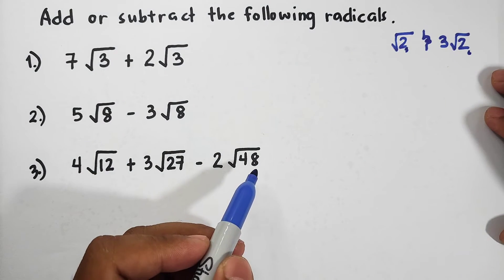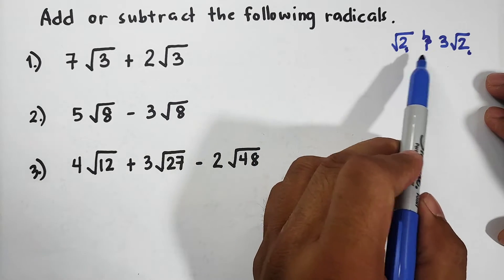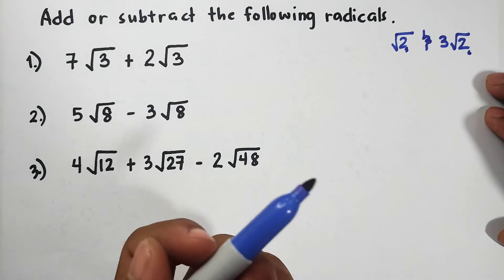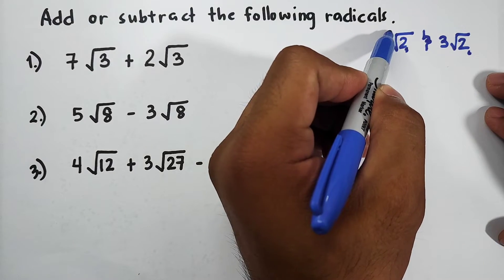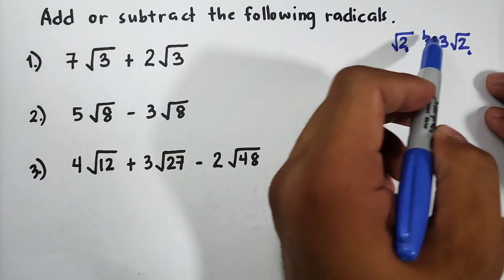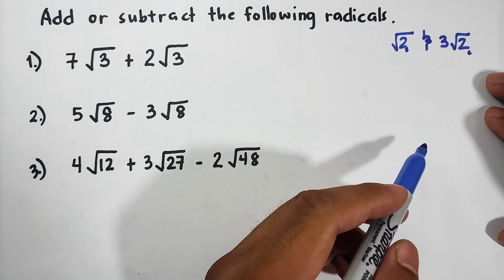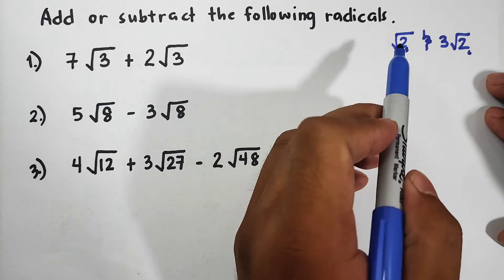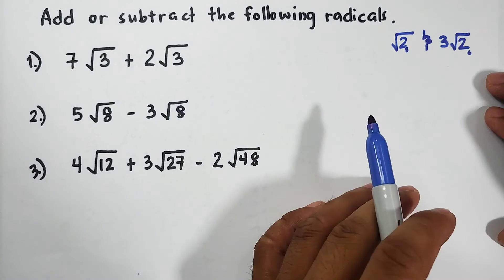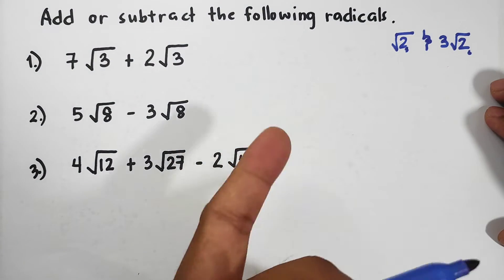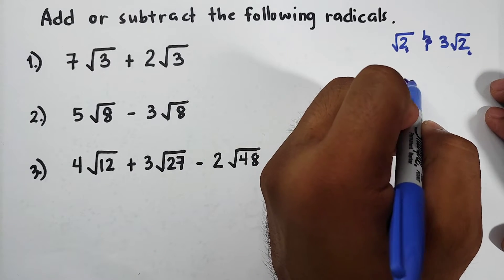First, look at the radicand — as you can see, the radicands are both 2. Second, check their index. Since both are invisible (meaning the index is equal to 2), these are similar radicals. Now let me give you an example of radicals that are NOT similar.